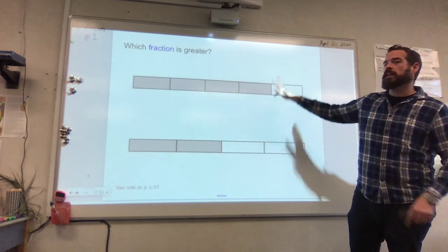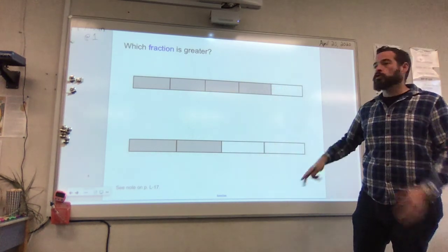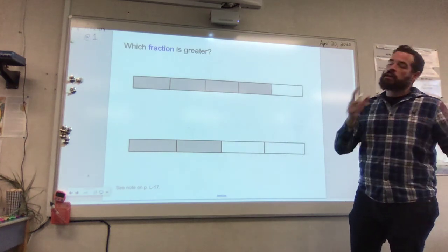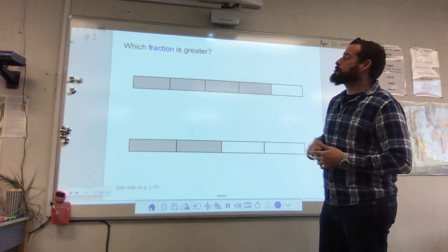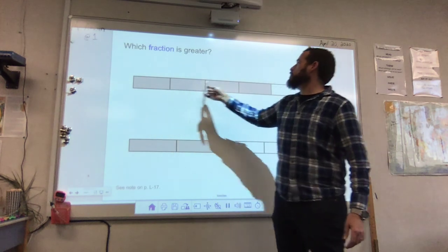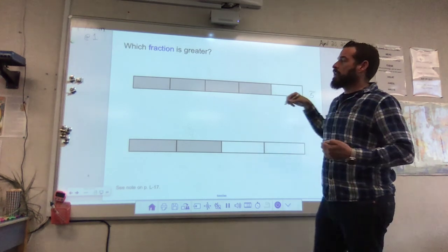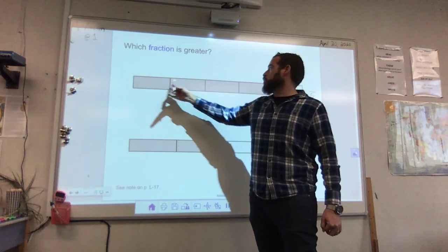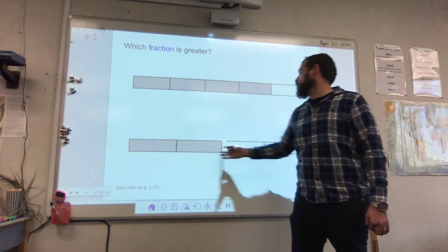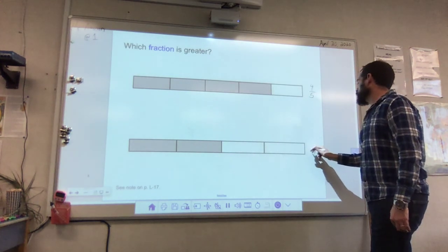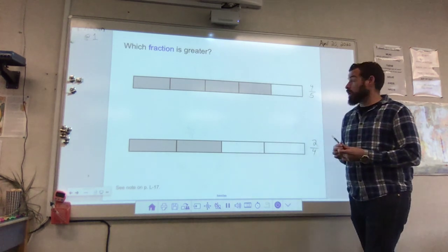Now let's look at fraction strips again — I want to show you how comparing fractions with strips is similar to comparing them using the number line. We count 1, 2, 3, 4, 5 sections — so that's going to be our denominator — and then count how many sections are shaded: 1, 2, 3, 4 — so we've got 4 fifths. In the second strip there are 4 total parts and 2 of those are shaded, so 2 fourths is our fraction. And we need to determine which one is greater.